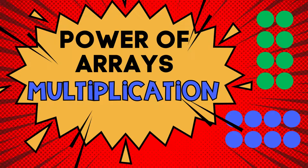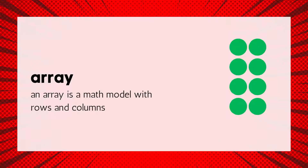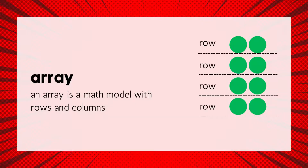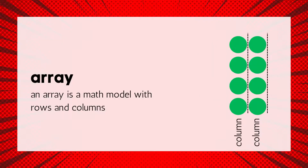Let's talk about the power of using arrays to solve multiplication equations. An array is a math model with rows and columns. This array has four rows. Rows are horizontal — they go from left to right. This array also has two columns. Columns are vertical; they go up and down.